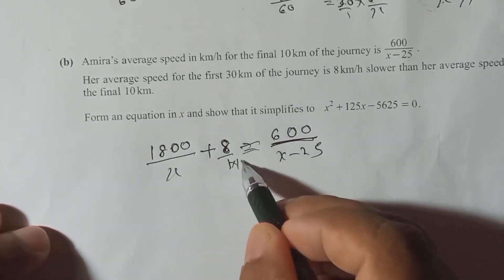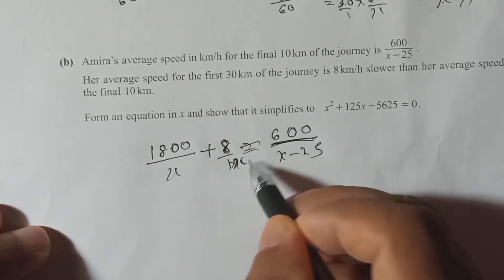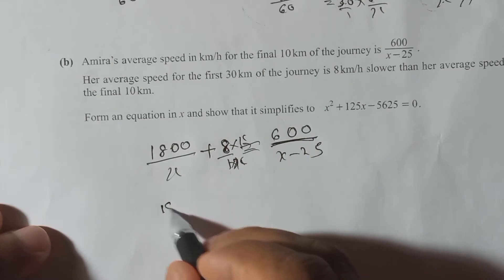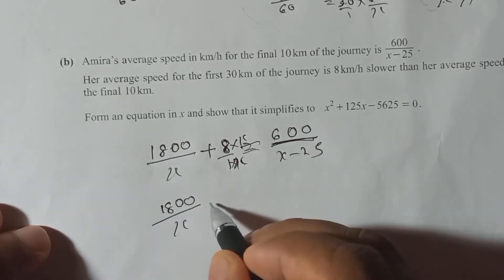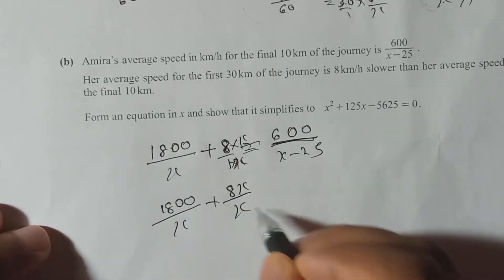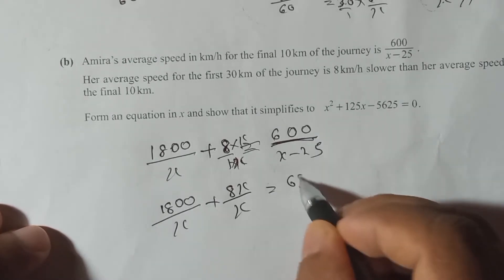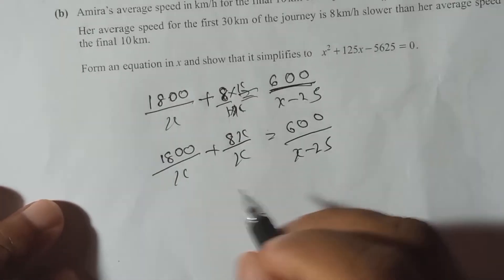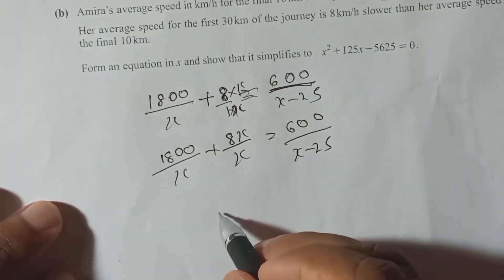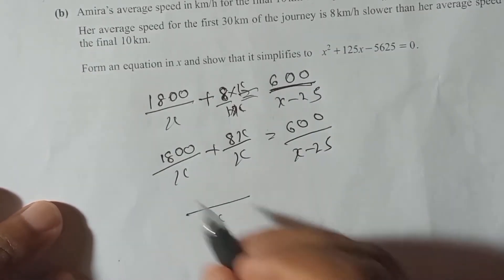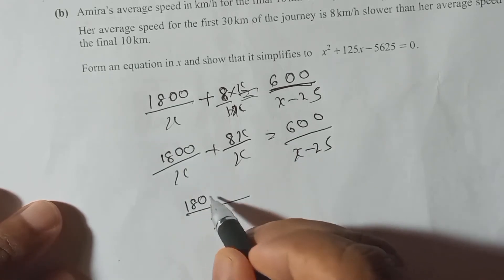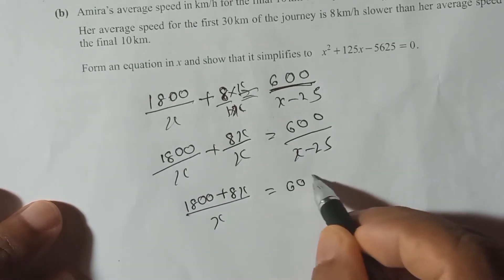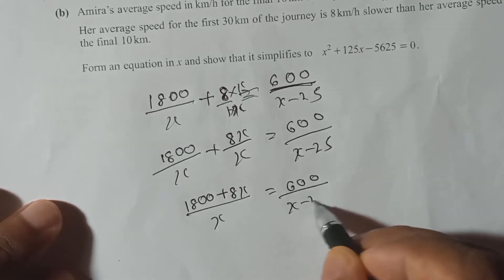I will multiply the whole number 8 by x over x to get the same denominator. Then we have 1800 over x plus 8x over x, giving us (1800 + 8x) over x on the left, equal to 600 over (x minus 25) on the right.